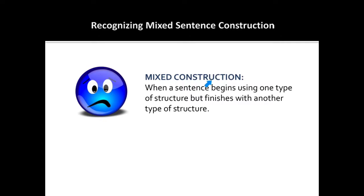Mixed sentence construction occurs when a sentence begins using one type of structure but finishes with another type of structure altogether. When it comes to mixed sentence construction, there is no one hard and fast rule for identifying or fixing the error. Unfortunately, mixed sentence construction comes in many forms, and the error is very common.